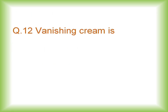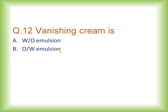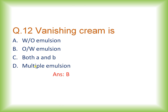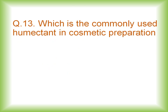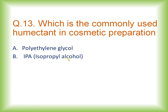Question number twelve: vanishing cream is which type of emulsion — W/O emulsion, O/W emulsion, both, or multiple emulsion? The right answer for question twelve is that vanishing cream is an O/W type of emulsion.